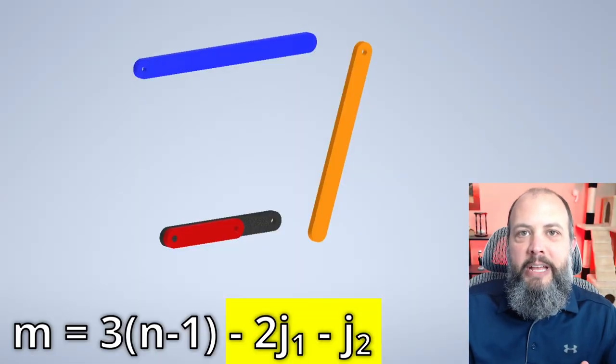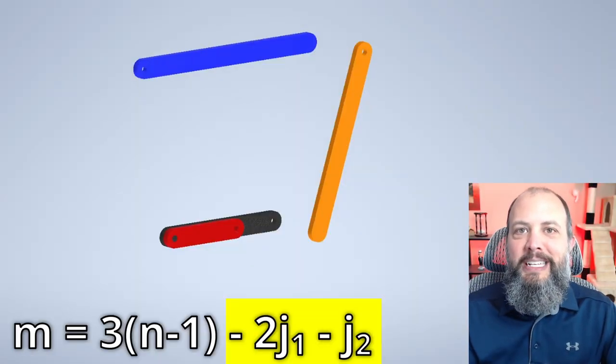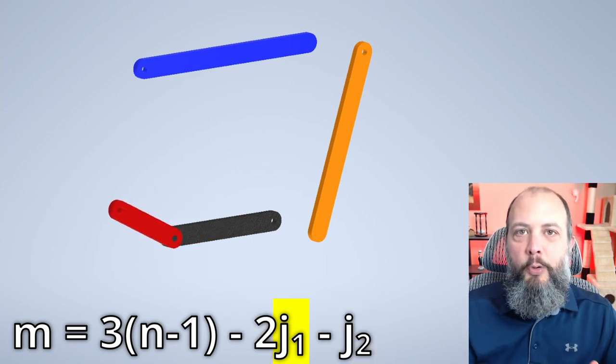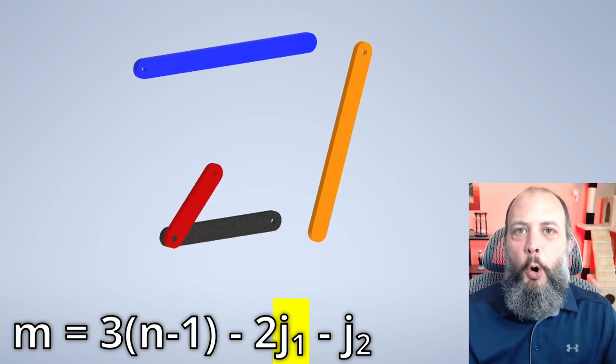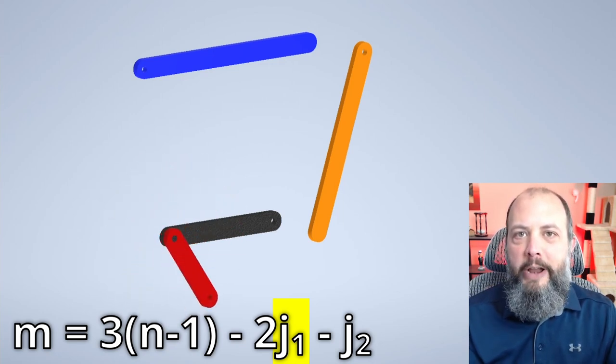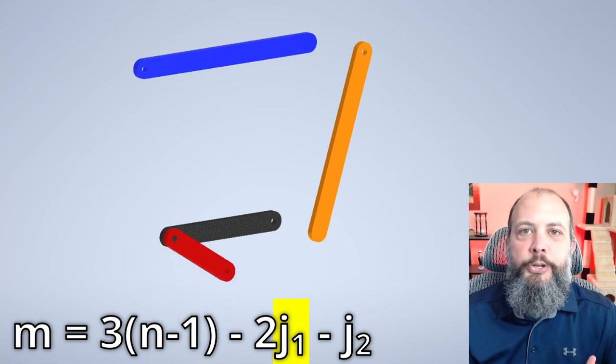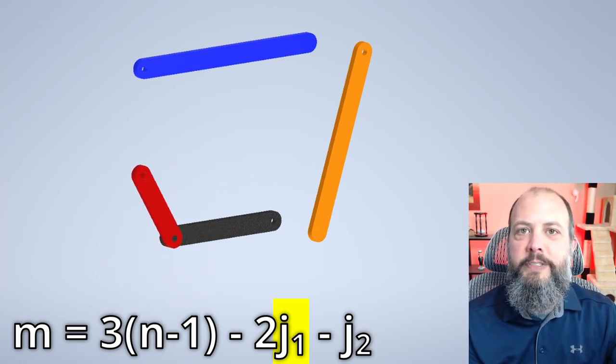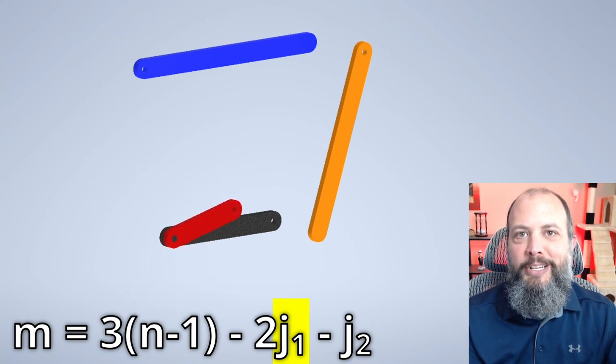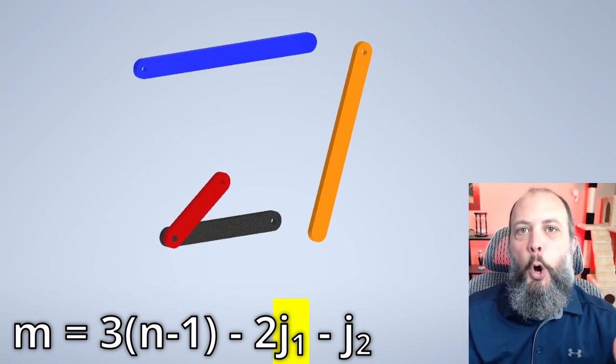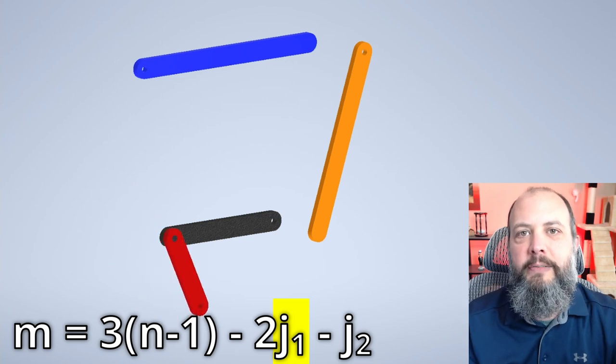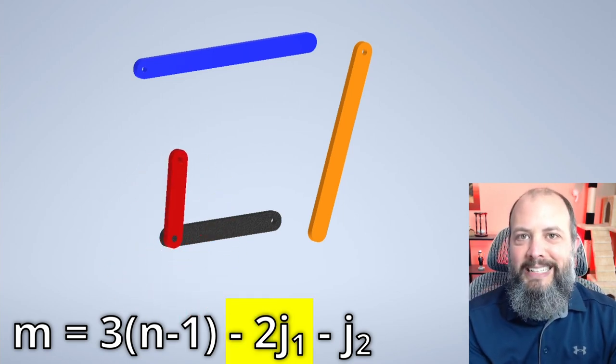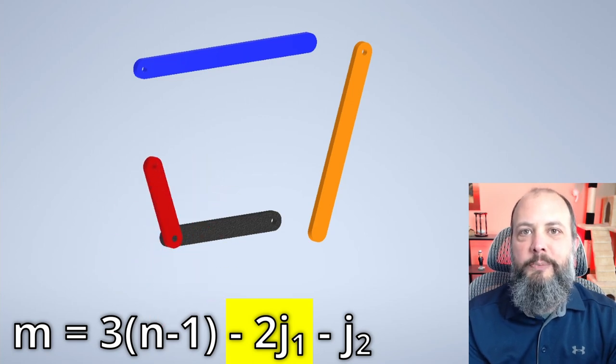The second half of the equation, the j₁ and the j₂, means that you restrict motion at each joint. A j₁ is also called a lower pair, and this is a joint that only allows motion in one direction. An example of this would be a pin joint. When you're drawing a free body diagram, you have to add two forces for a pin joint: a force in the x direction and a force in the y direction, because a pin joint only allows rotation. So minus two j₁ because you're subtracting the x direction motion and the y direction motion.